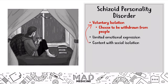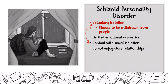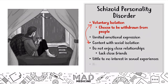It's voluntary isolation. They don't enjoy close relationships, don't want them, don't need them — they're okay being alone. While all Cluster A disorders cause difficulty making relationships, schizoid patients actively choose not to have relationships. They have a lack of close friends and little to no interest in sexual experiences or any hobbies and interests. That lack of hobbies or interests is what differentiates schizoid from autism.